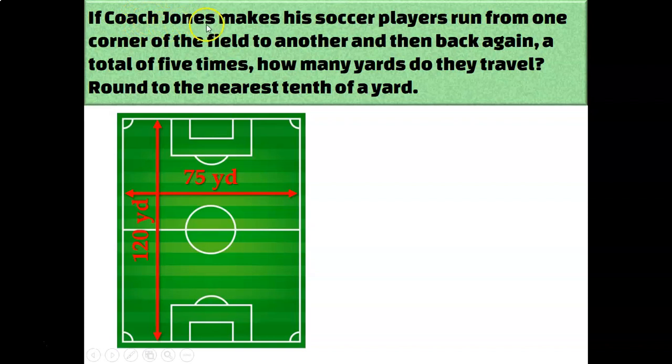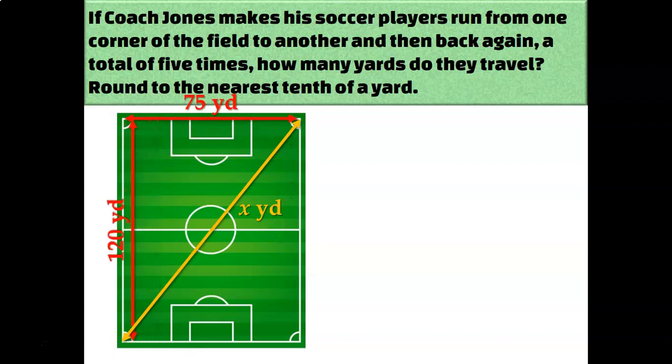Okay, well, if Coach Jones is making his players run from one corner across the field, like through the middle of the field to the other, I need to figure out what this length is. And it can feel a little confusing of how am I supposed to relate the Pythagorean theorem to something like this because of the way that everything's labeled. But if I move the 120 and I move the 75 off to the sides, to the edges of this shape, instead of being in the middle the way that it was originally labeled, it's a little bit easier to see that we have a right triangle.